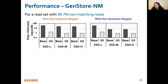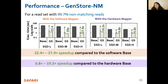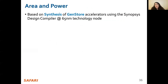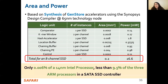We analyzed the benefits of GenStore NM for a 12 GB long read set with high genetic variation, where 99.7% of reads do not match any subsequences in the reference genome. GenStore provides up to 27.9x speedup compared to the software baseline and up to 19.2x speedup compared to the hardware baseline, with an average 27.2x energy reduction. We find area and power values of GenStore by synthesizing GenStore EM and NM using 65 nm technology node, and find that for an eight-channel SSD, the area of GenStore is 0.2 mm² and the power is 26.6 mW. The area overhead of GenStore is 0.006% of an Intel processor and less than 9.5% of the three ARM cores used in a SATA SSD controller.